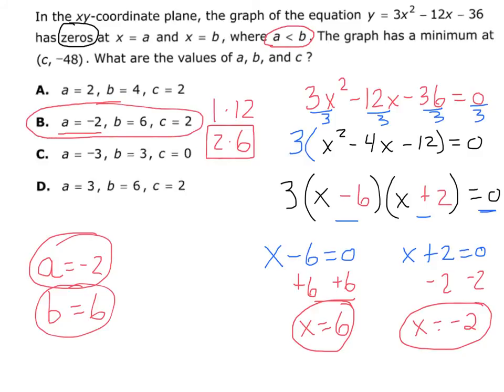But now let's go back and let's look. It says that I have a minimum at this point. Now remember, minimums occur where? They occur at the vertex. So let's calculate the vertex of this.